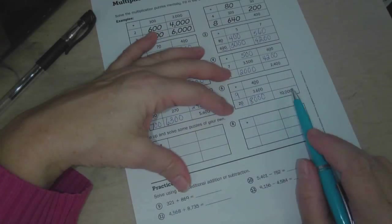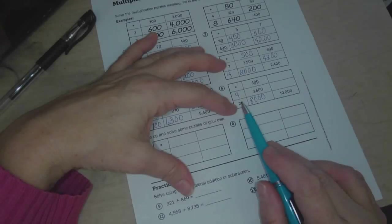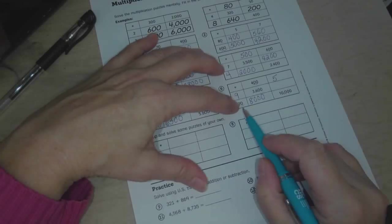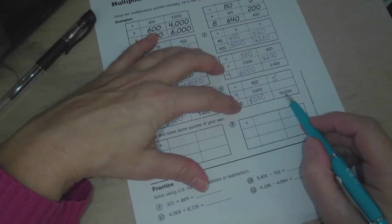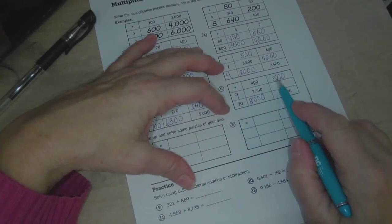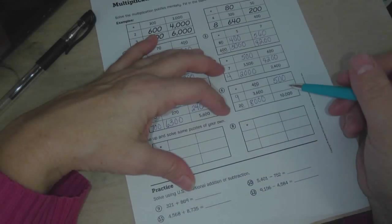20 times what equals 10,000? Well, we know that 2 times 5 is 10. Then we have a zero here, so that takes care of that zero. And there's two more zeros, so we put those there. So now we have 2 times 5 is 10, and 1, 2, 3, 1, 2, 3. So that works out.